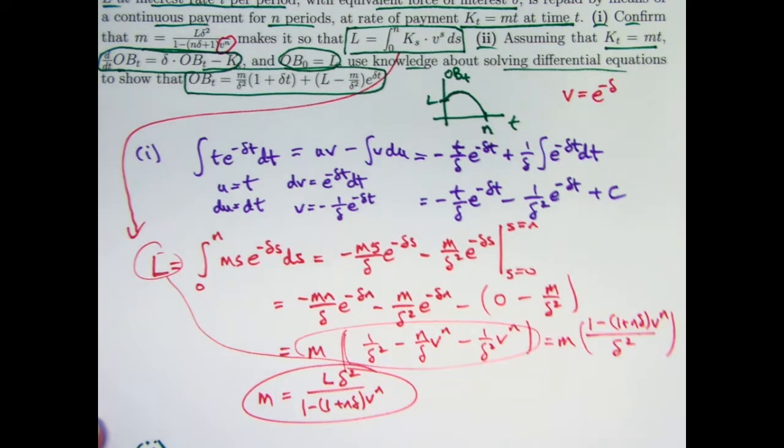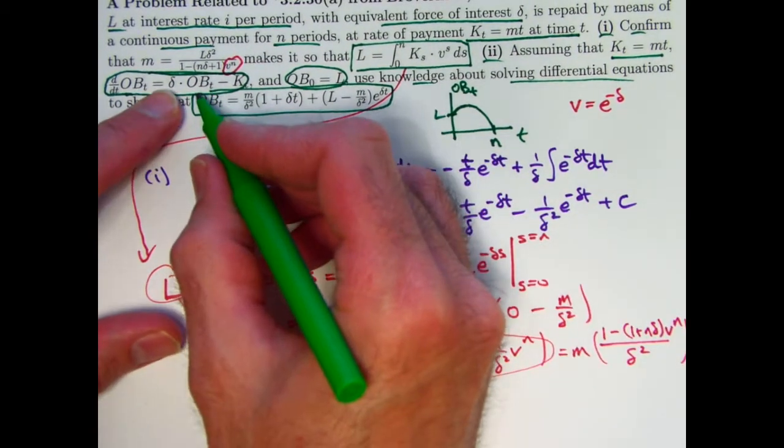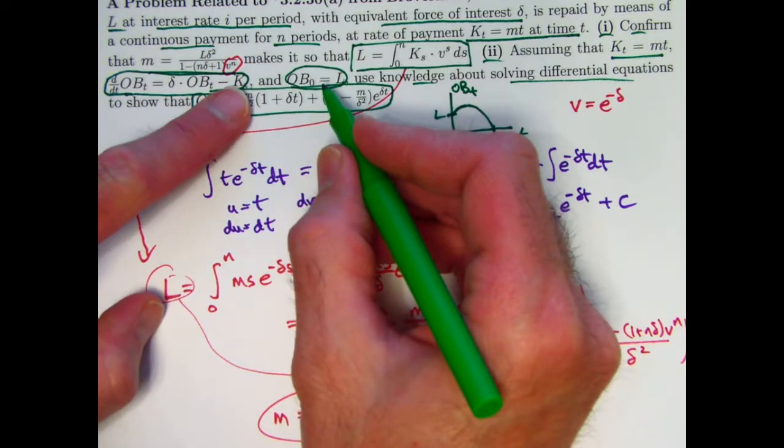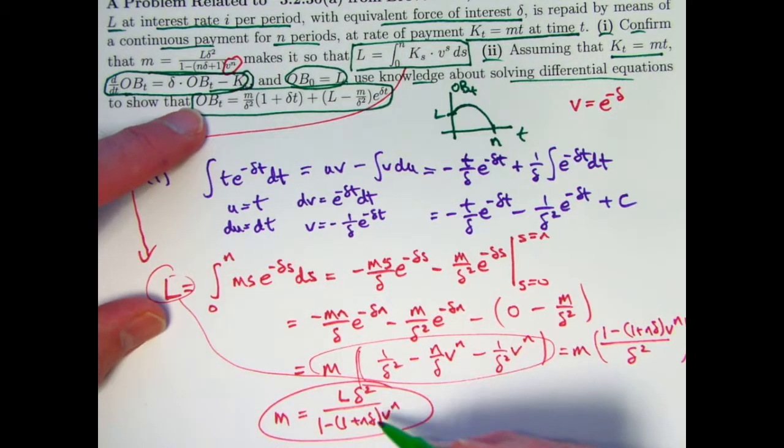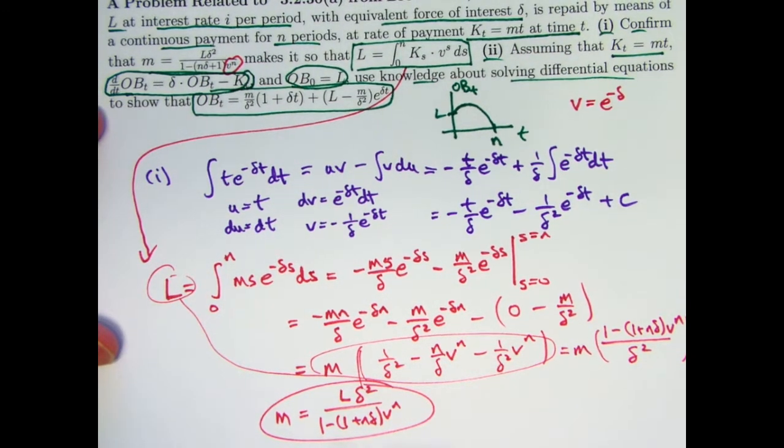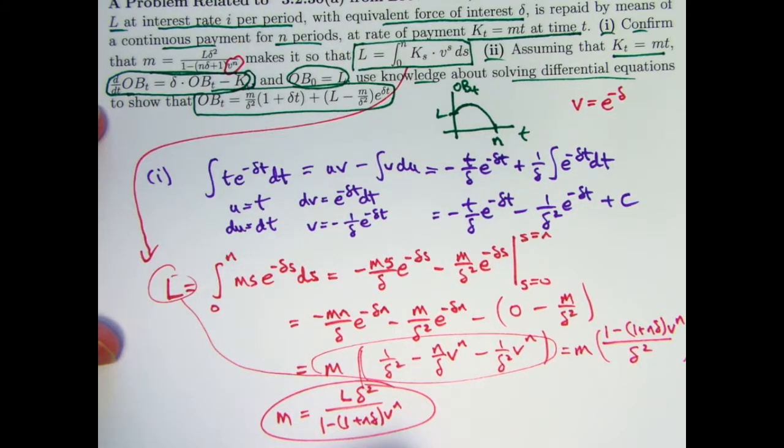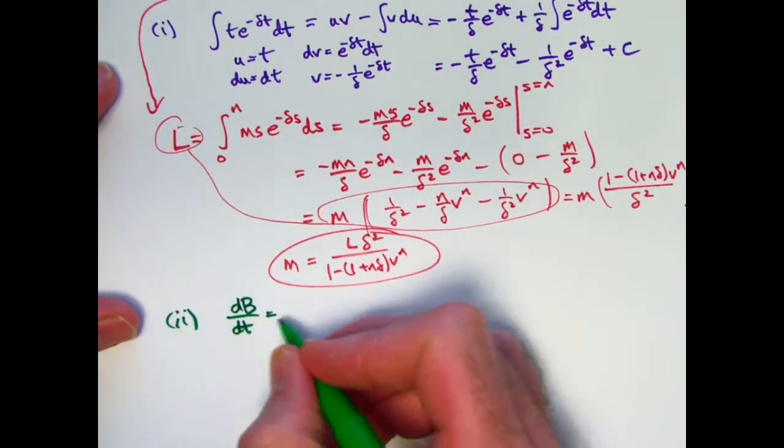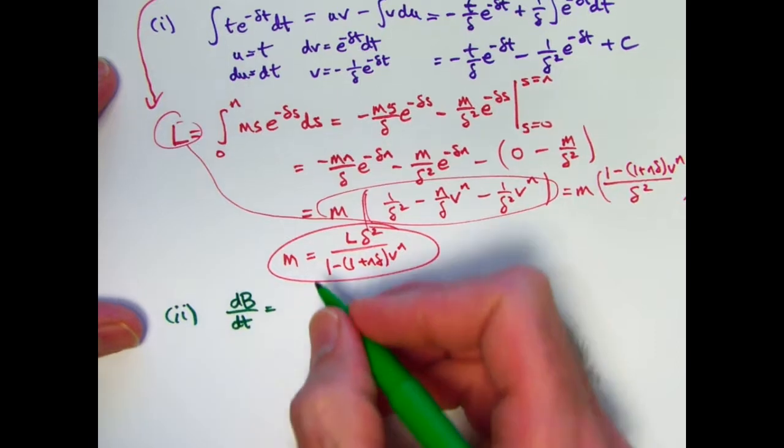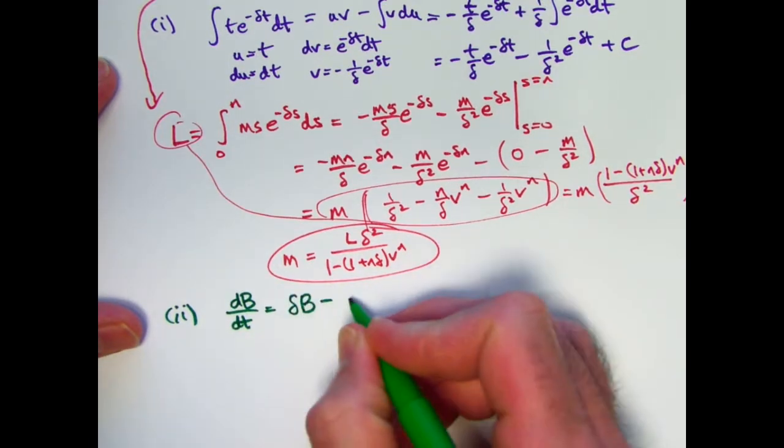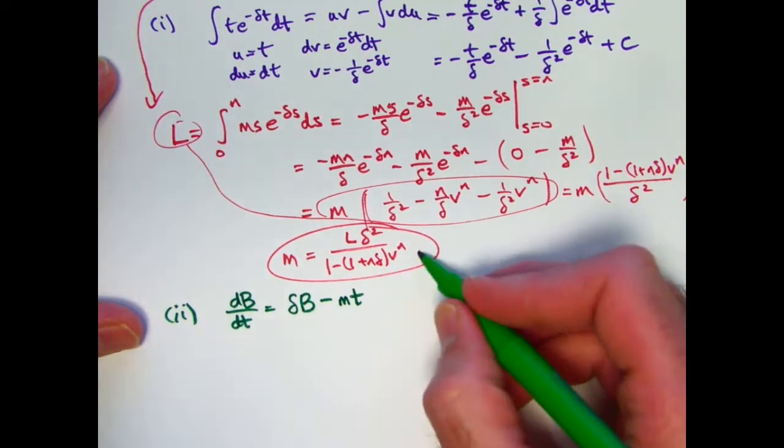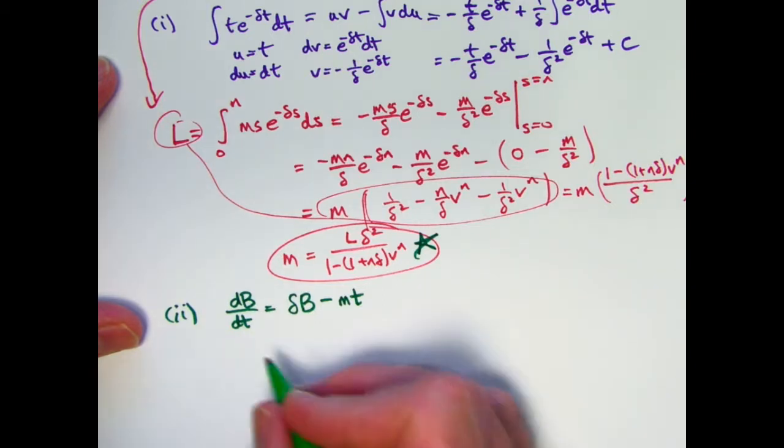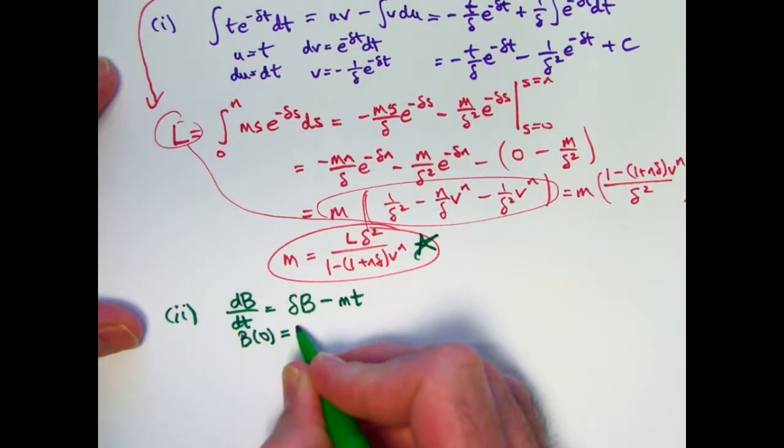What about part 2 now? We're going to solve this differential equation with this initial condition. When KT, that's a KT here by the way, is M times T, where M would have to be the same constant that we found in part 1. But I won't bother writing that in there. As I did in the last video, just to save a little writing, I'll call the balance function B instead of OB. The differential equation looks like this. And again, I won't bother plugging in what M is. It does equal this right here, and that's something that should be kept in mind. The initial condition, B of 0 equals L.